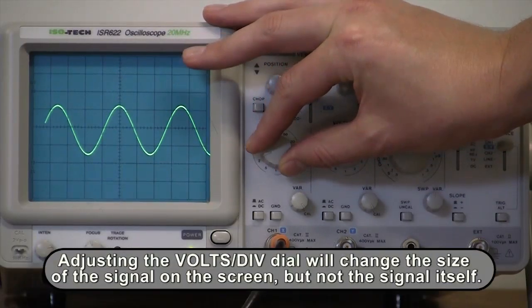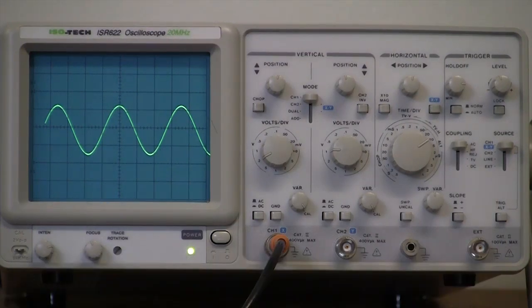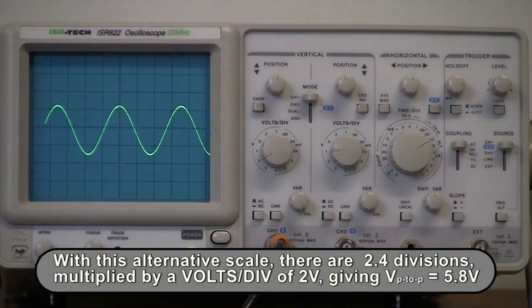Adjusting the volts per division dial will change the size of the signal on the screen, but not the signal itself. With this alternate scale, there are 2.4 divisions multiplied by a volts per division of 2 volts, giving a peak-to-peak voltage of 5.8 volts.